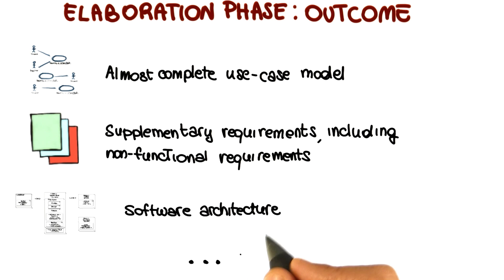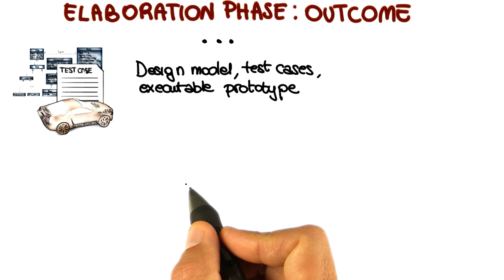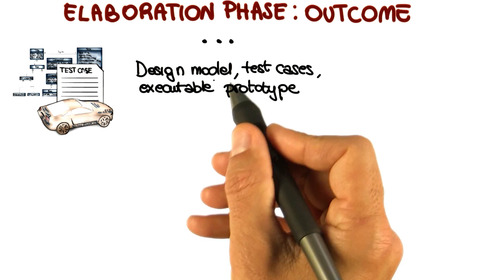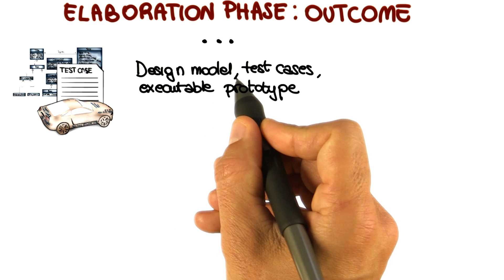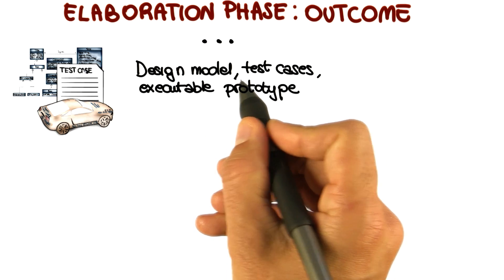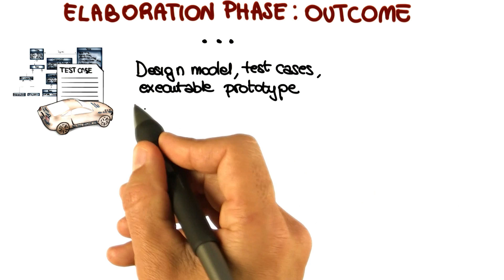In addition to producing a complete architecture for our system, in the elaboration phase we also define the lower level design for the system. Therefore, as part of this phase, we produce as deliverables a design model, and together with that, a complete set of test cases and an executable prototype.